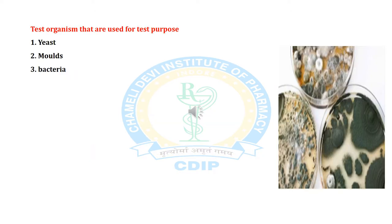These are some test organisms used for microbiological assay purposes: first is yeast, second is molds, and the third one is bacteria.